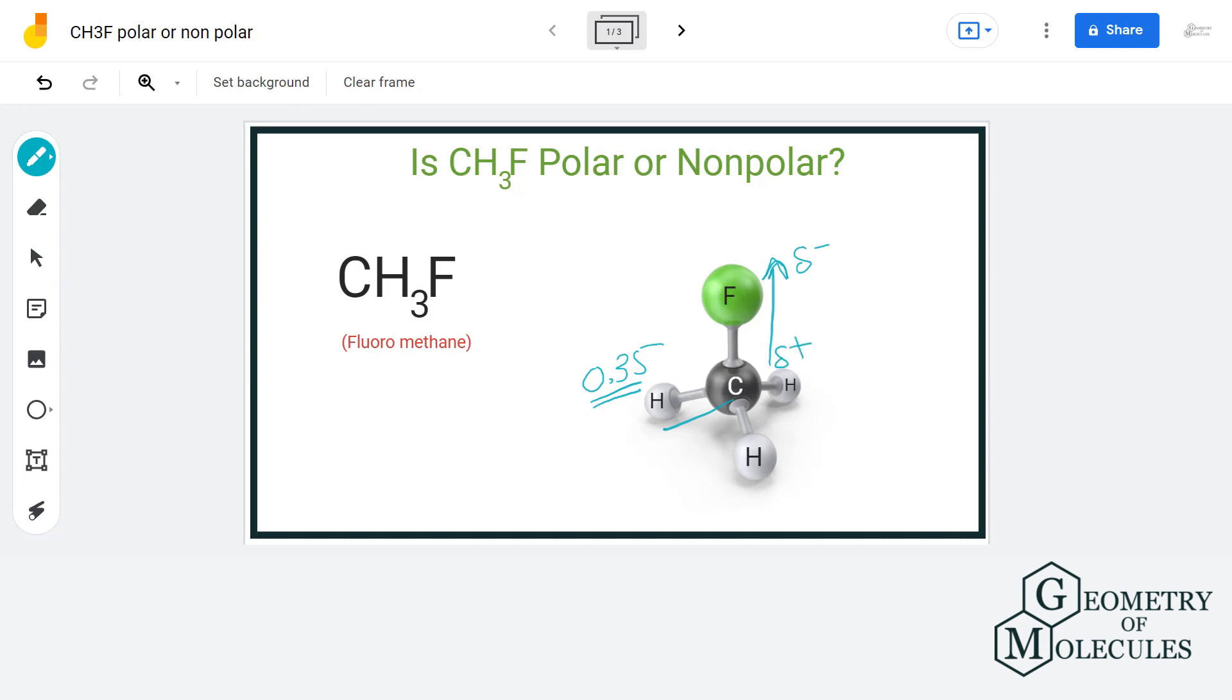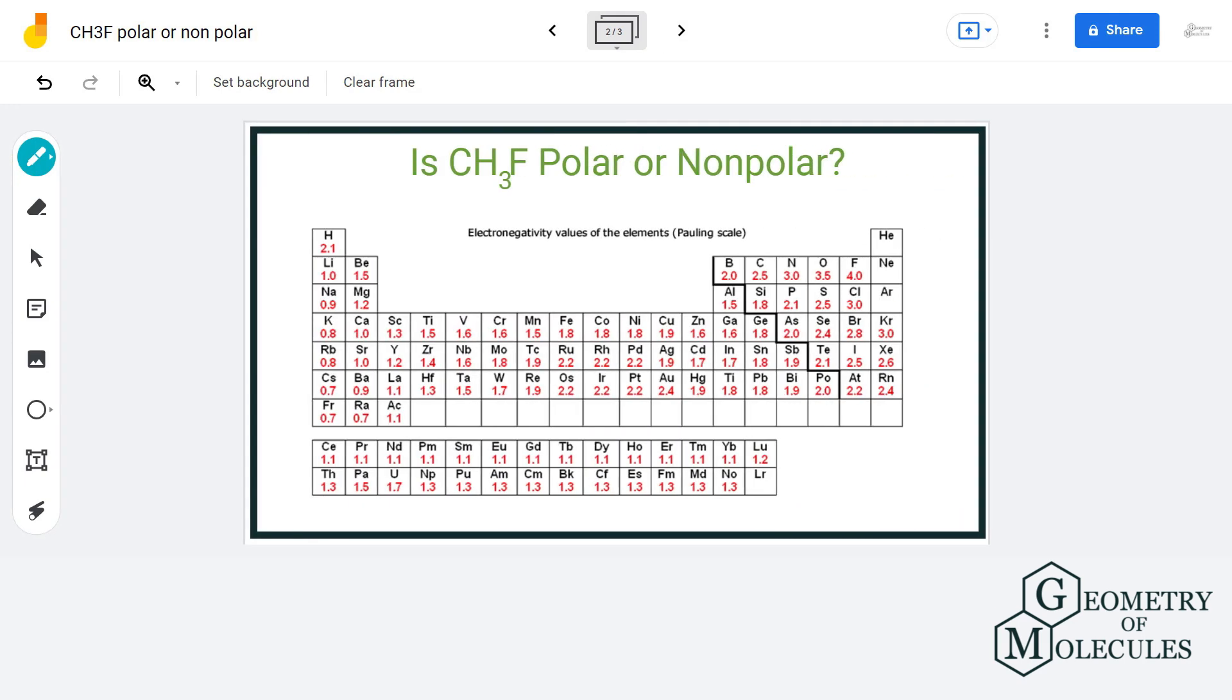Let us also look at the electronegativity difference between carbon and fluorine. If we calculate the difference we get the value of two, which is very high and it is enough to induce polarity in the molecule.